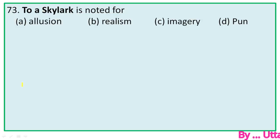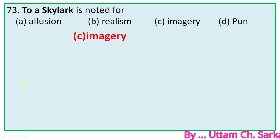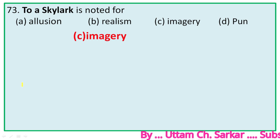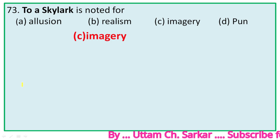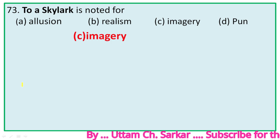Question 73: 'To a Skylark' is noted for — the right option is C, imagery. Because the poem is noted for imagery. Shelley uses a series of images in order to describe the bird and its song. He means to say the bird is invisible but its song is audible, and to explore this idea he uses a series of images.